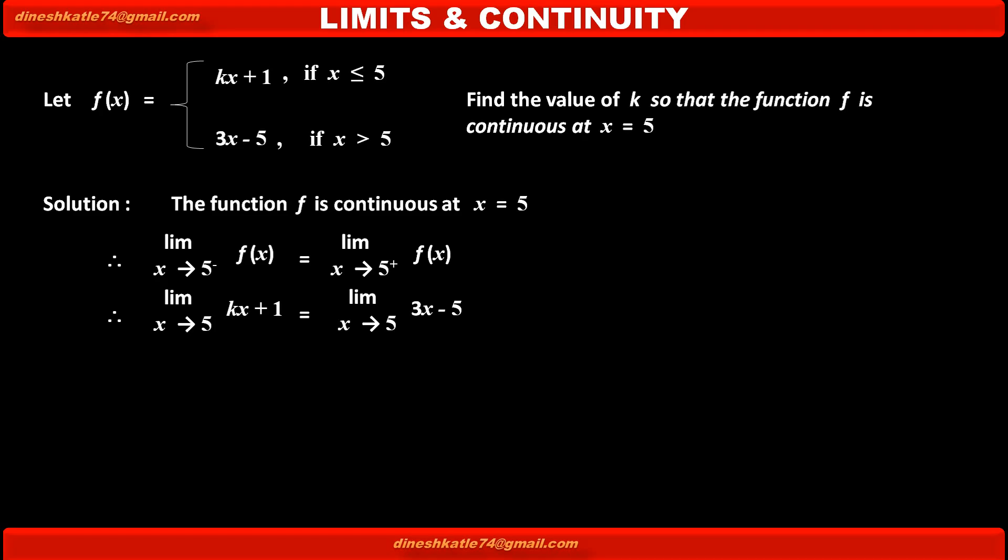The right-hand side function: if x is strictly greater than φ, then the function is 3x minus φ. So limit as x tends to φ positive is 3x minus φ.